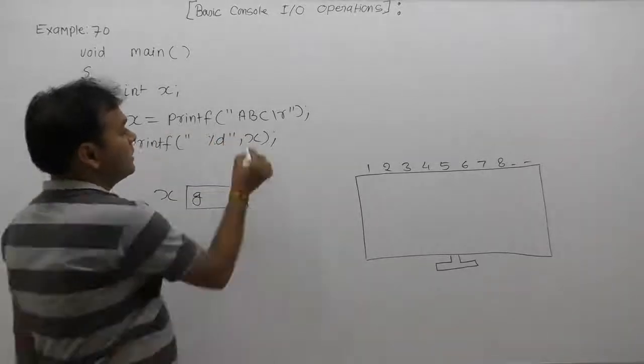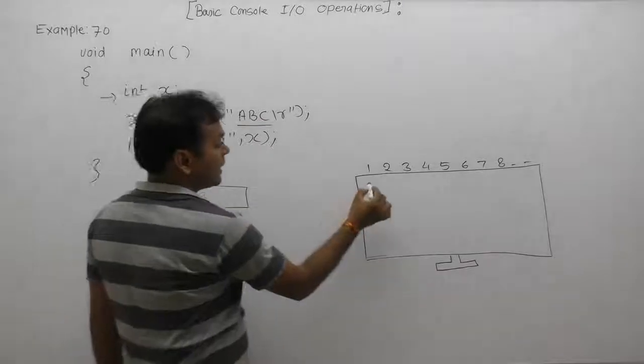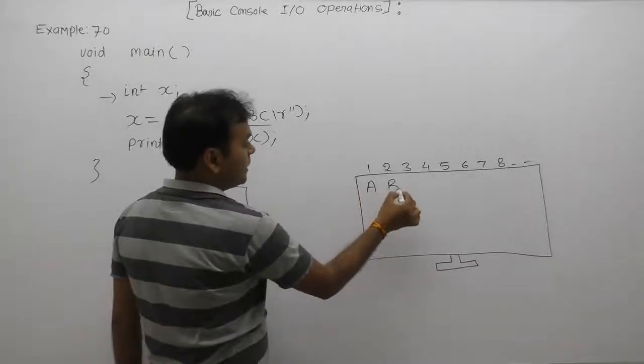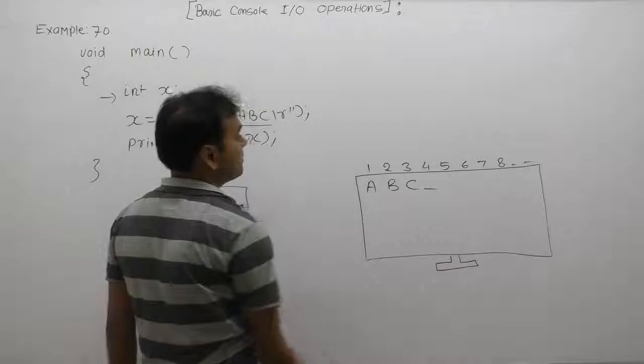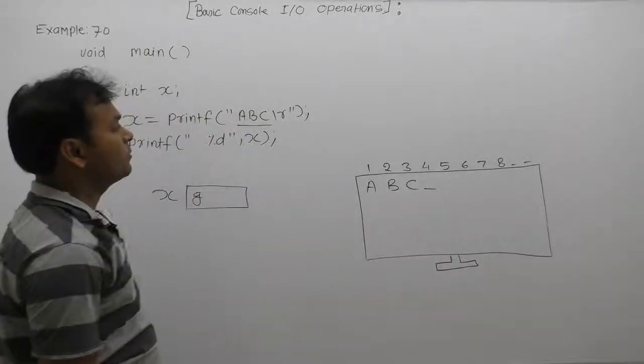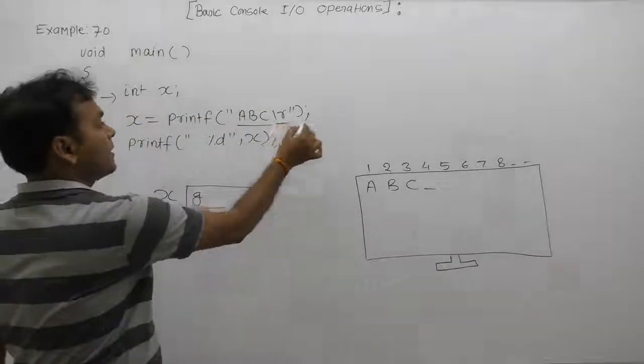That printf function prints characters A B C and cursor will be available on the fourth position. Then according to slash r...